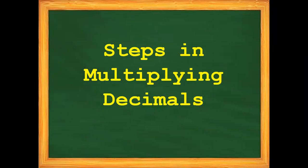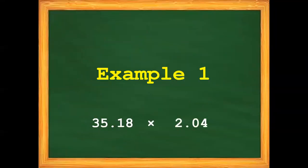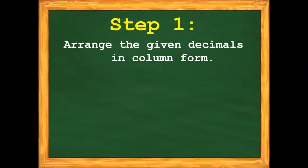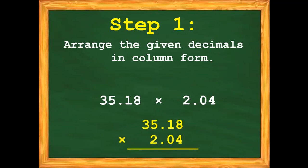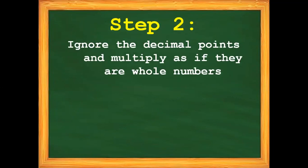Now, let us solve the problem. Let us review the steps in multiplying decimals. Step number 1: Arrange the given decimals in column form. Step number 2: Ignore the decimal points and multiply as if they are whole numbers.